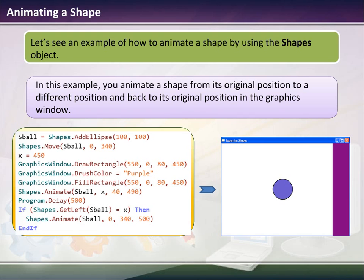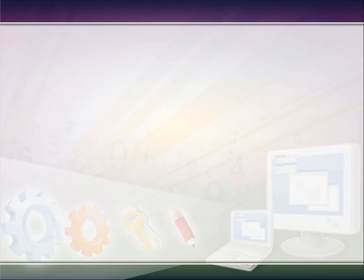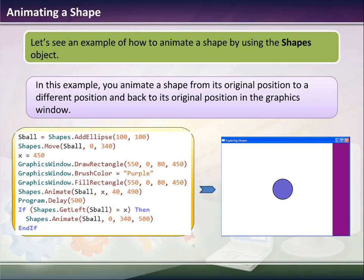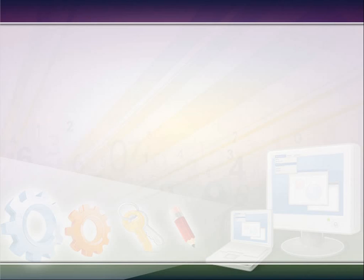So this is what it'll look like when we're done. We have a rectangle off to the side. We have our softball.